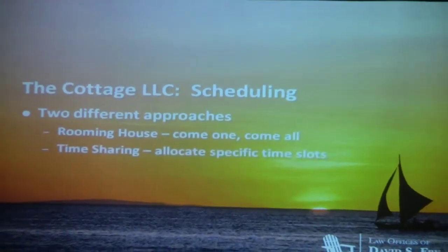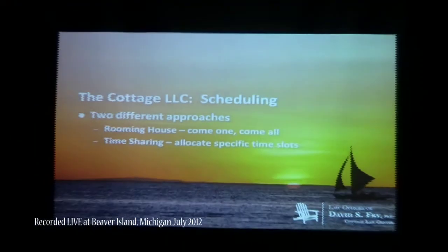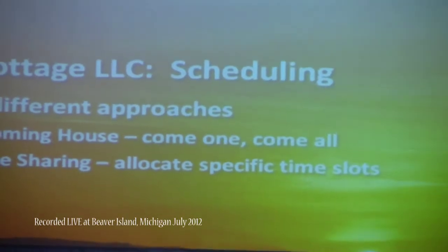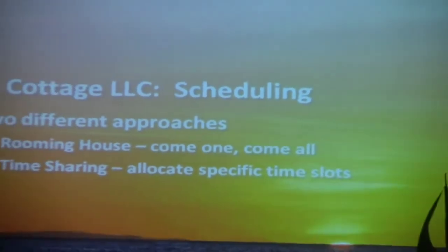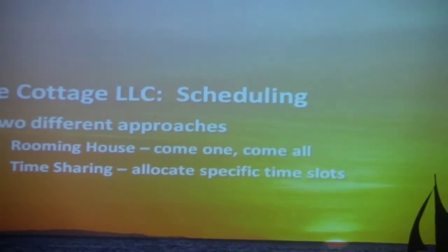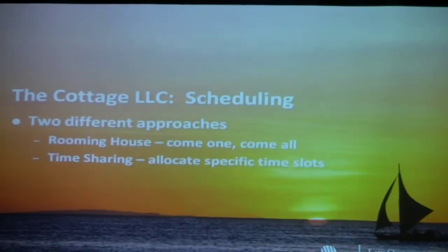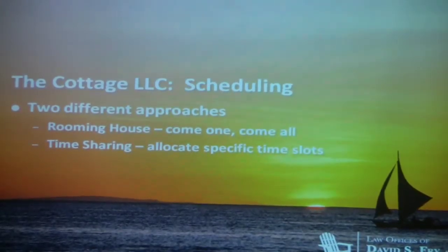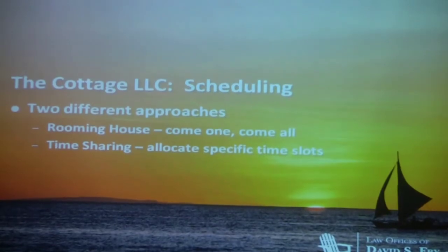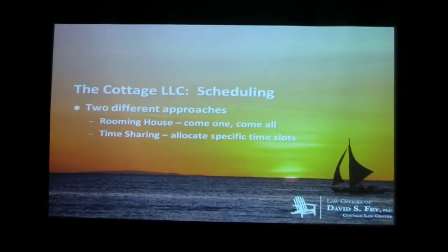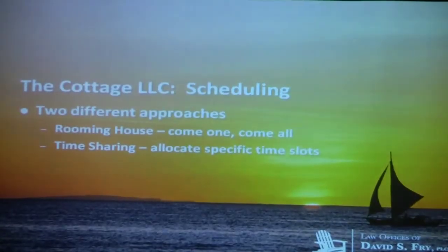There are two different scheduling approaches: the so-called rooming house approach and the time-sharing approach. The rooming house approach is where you just open the doors and anybody that can come, comes. This is typically the arrangement that mom and dad have in place as long as they are occupying the property, because they want to see at least the grandchildren if not the children, and they encourage people to come whenever they can.